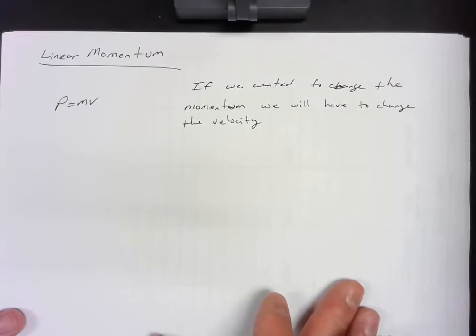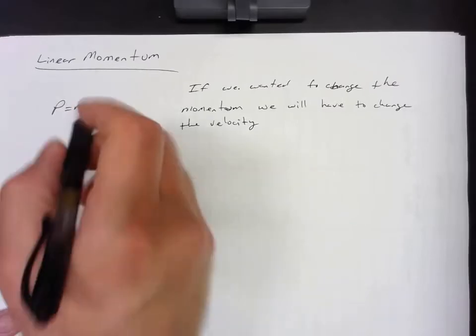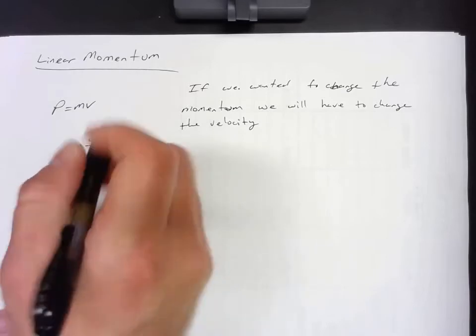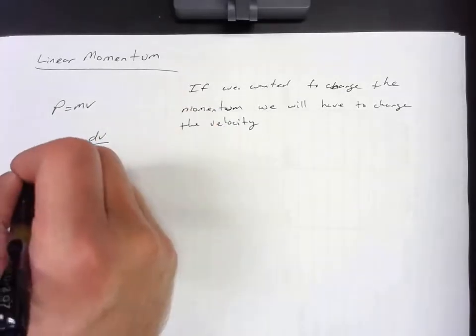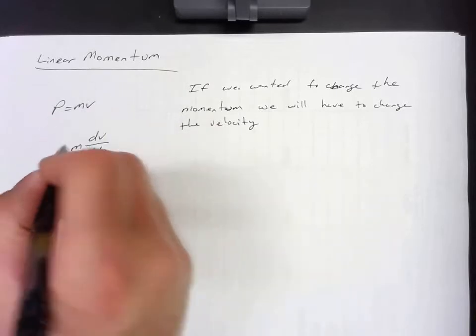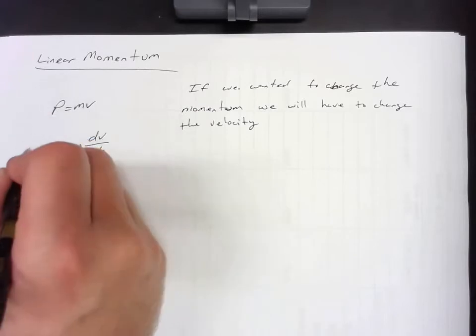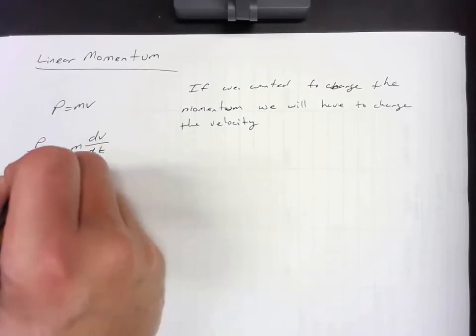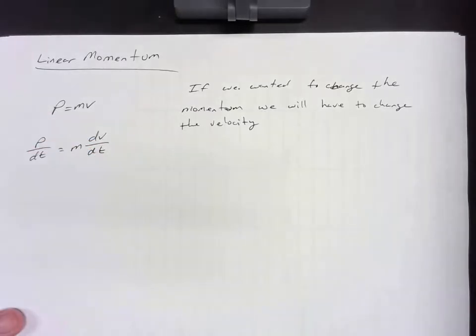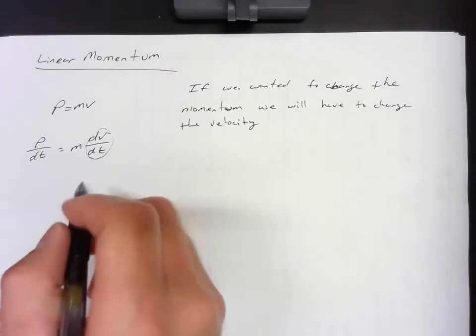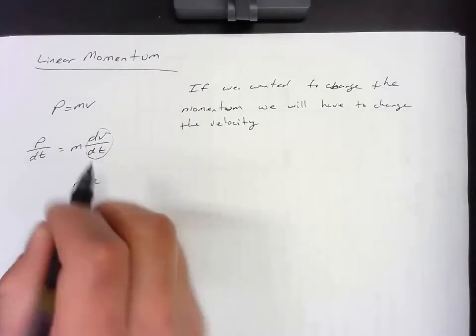So if the velocity changes, that means that it's going to have to accelerate. So if I take the derivative of V on this side, I have to take a derivative with respect to time on this side. And we know that dV/dt is acceleration.